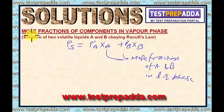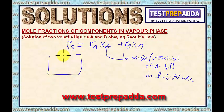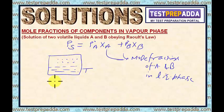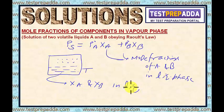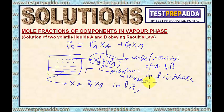In this session, we will learn mole fractions of A and B in the vapour phase. If you keep a liquid at a particular temperature T, you will get some vapour. X_A and X_B are the mole fractions in the liquid phase. In the vapour state, you will have vapours of A and vapours of B — it is a mixture. So X'_A and X'_B are the mole fractions in the vapour phase. In this session, we will talk about these mole fractions.